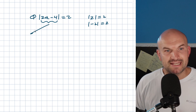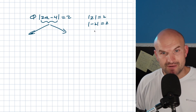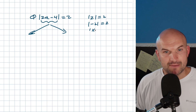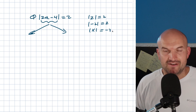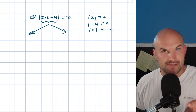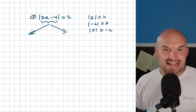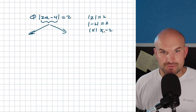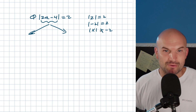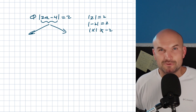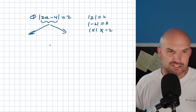We have to take into account both of these cases. However, one thing that cannot work is the absolute value of some expression equaling a negative value. The absolute value in both examples is always equal to a positive 2 — it's never going to equal negative 2. So whenever an absolute value is equal to a negative number, there's just going to be no solution.